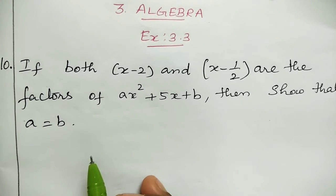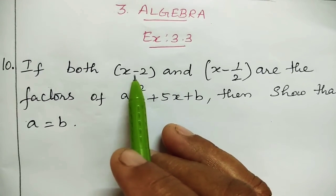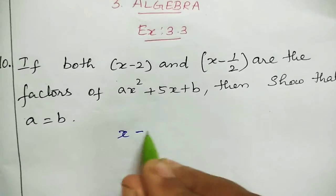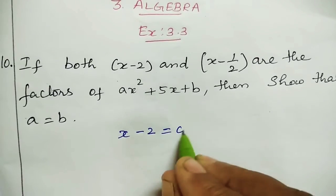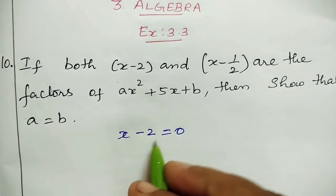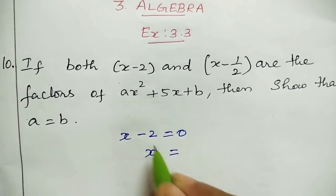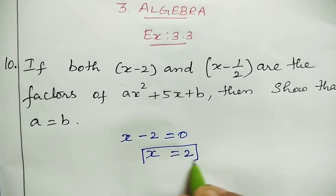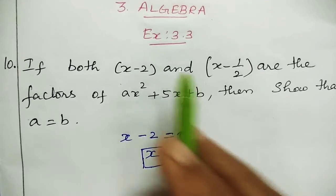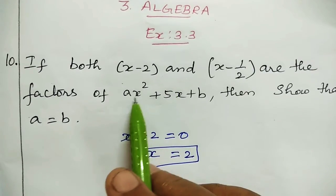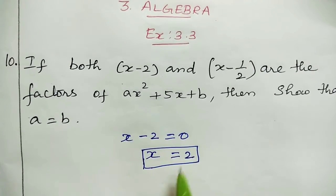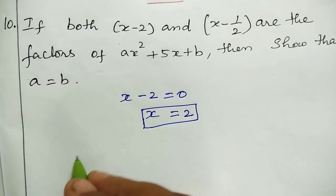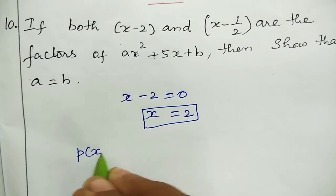First, we take x minus 2 equal to 0, so x is equal to 2. We substitute x equal to 2 into p(x), which is equal to ax squared plus 5x plus b.